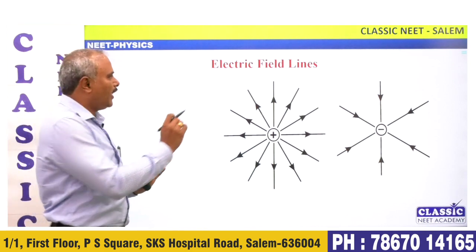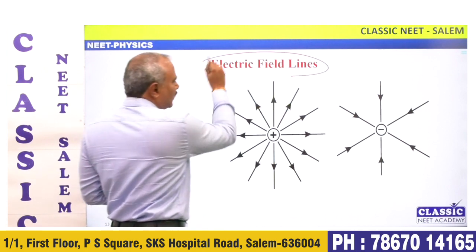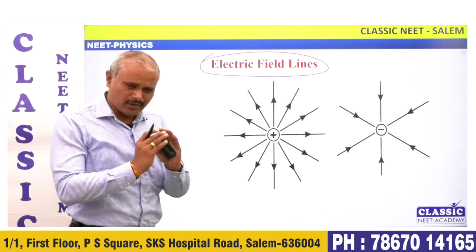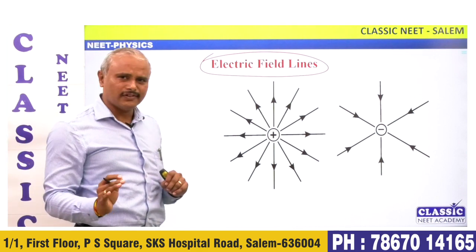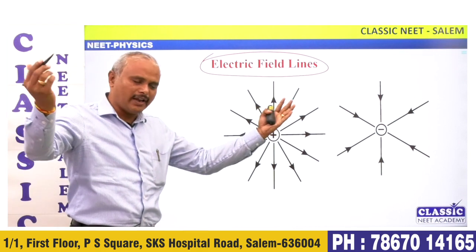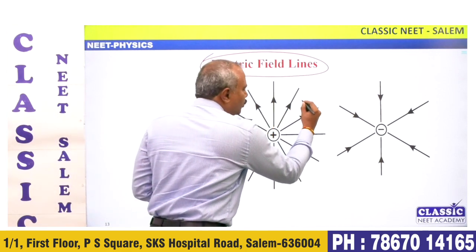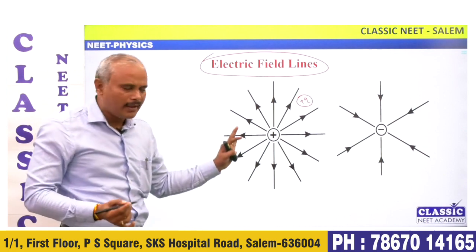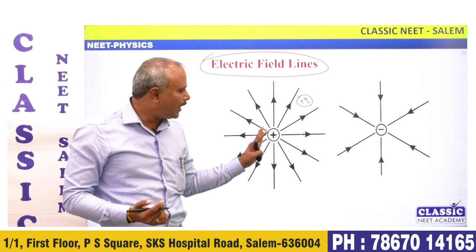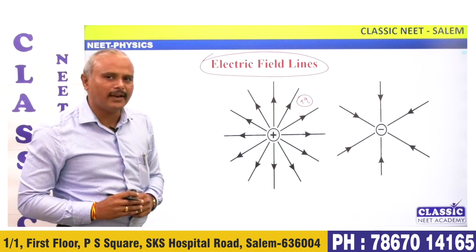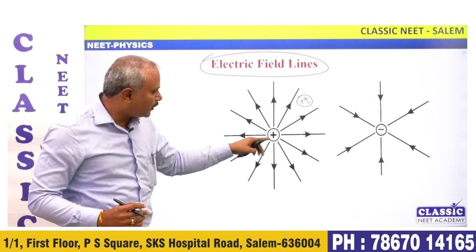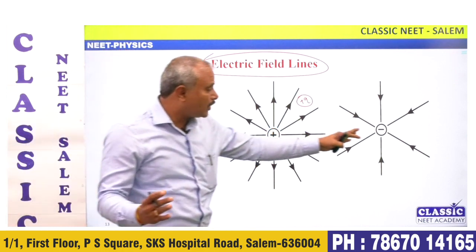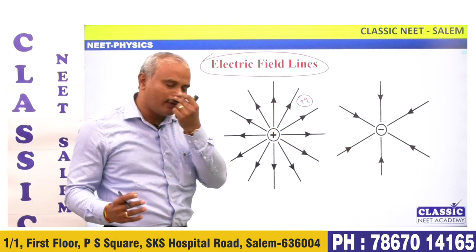NEET is a question. Electric field lines — one positive charge is very simple to say. Field lines are imaginary lines. An imaginary line is traced by a unit positive charge in electrostatics. Unit positive charge will move through any direction following electric field lines. Then for a positive charge, the field lines go outward.